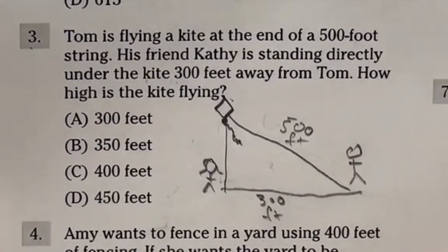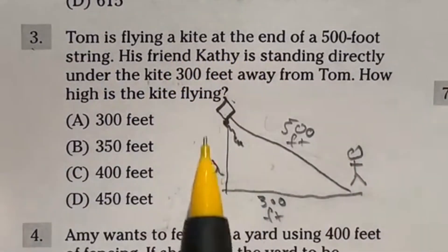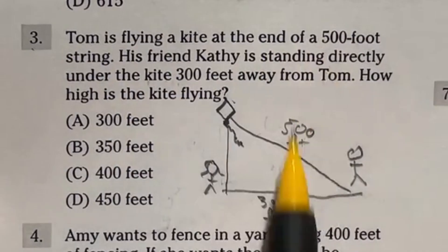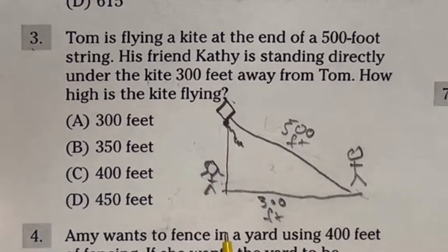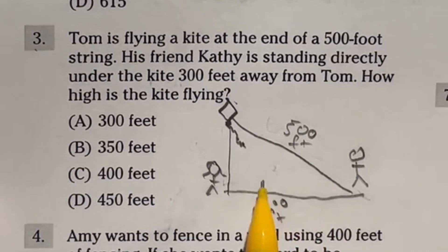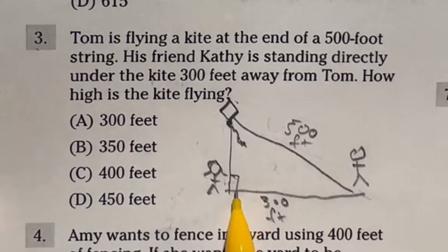Now you can still do it this way. Just trying to give you some other ways to think of it mentally since there's no calculator here. Let's take a look at three. I already drew a picture to help us out here. It says Tom is flying a kite at the end of a 500 foot string. His friend Kathy is standing 300 feet away from Tom. How high is the kite?